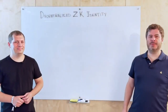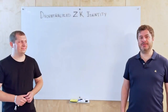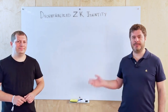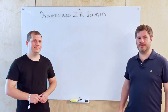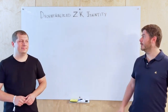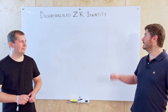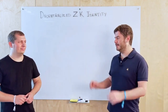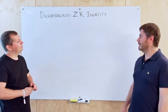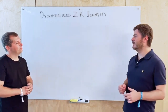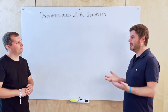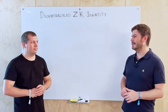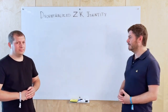Hello everyone and welcome to another session of ZK whiteboard sessions. Today I'm here with Alexander from Polygon ID and we're going to be talking about decentralized ZK identity and how zero-knowledge proofs fit into that. Hello Alexander. Thanks for having me. Let's start out with giving a bit of context — how do you think about identity and what different types of identity are there?